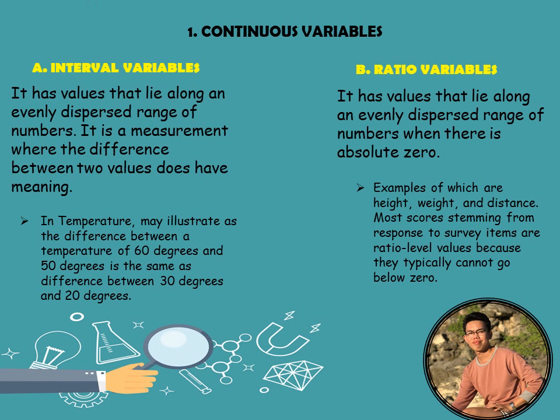To compare the two: temperature is the example for interval variables because zero degrees has meaning — it means cold, so there is no absence of zero. Height, weight, and distance are examples of ratio variables because they have an absence of zero — you cannot have zero height, zero weight, or zero distance. That is the difference between interval and ratio variables.